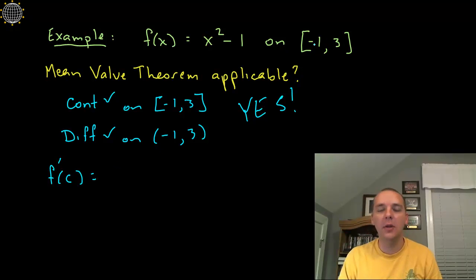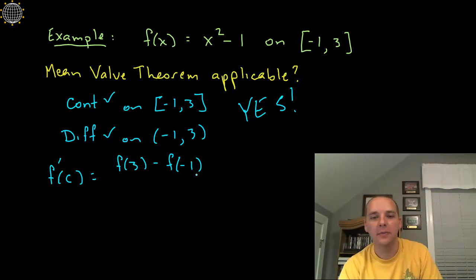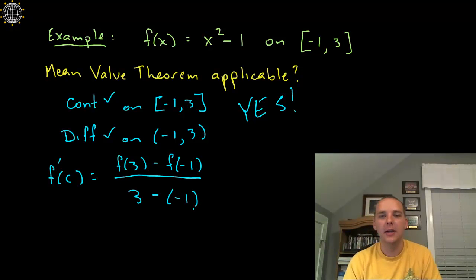Now what would the average slope be? Well, it's rise over run, so we would take f of 3 minus f of negative 1, that gives us the rise, divided by 3 minus negative 1, that gives us the run. That's the difference in the y values over the x values.